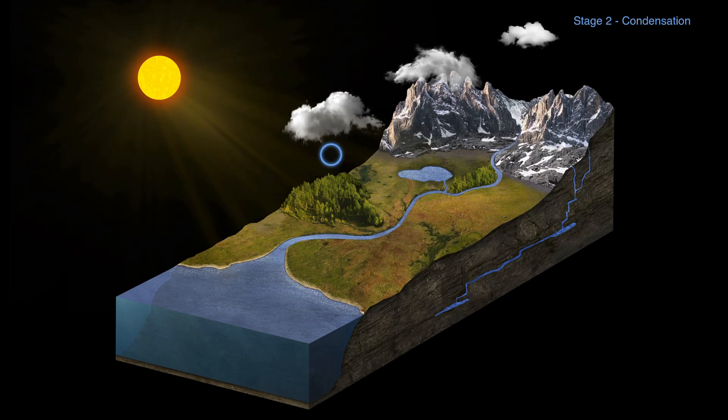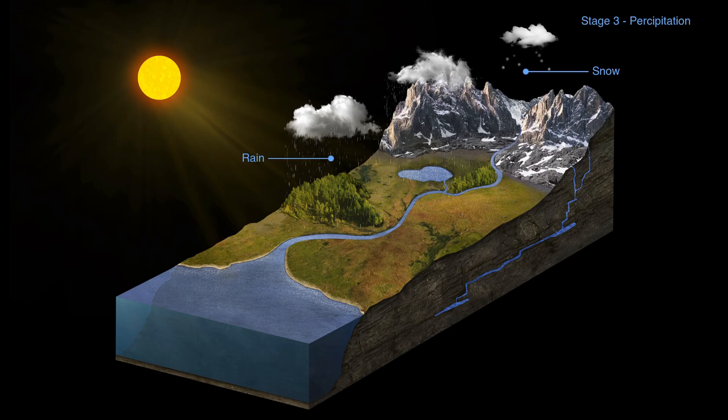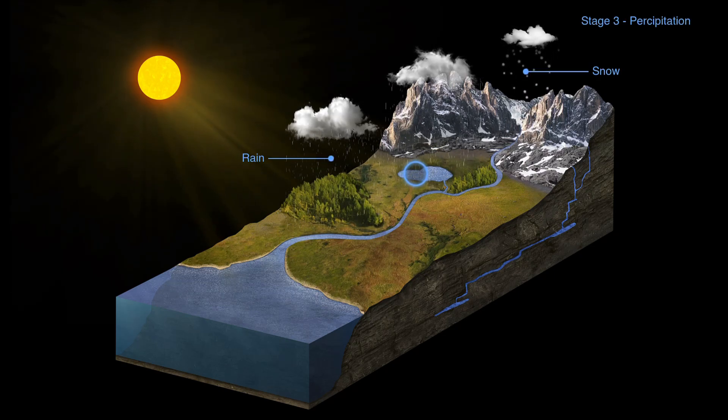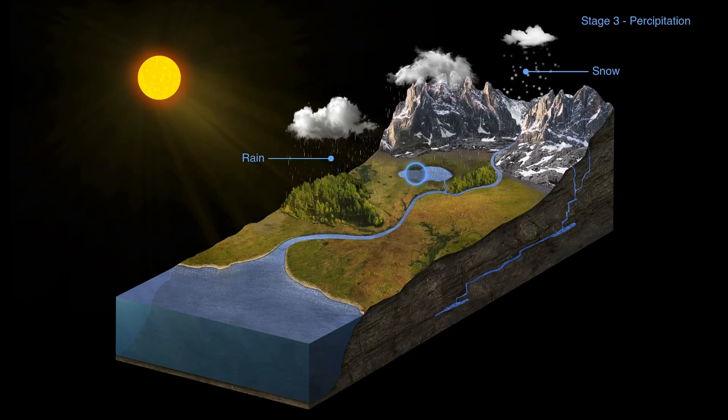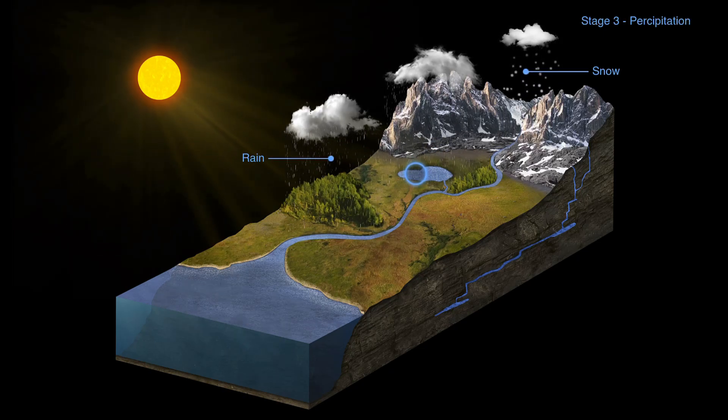And eventually, as we know, those clouds will grow heavy and dense enough with liquid water that precipitation will occur in the form of rain or snow, depending on the temperature of the air. This process returns all of that water from our atmosphere back to the surface of the Earth.